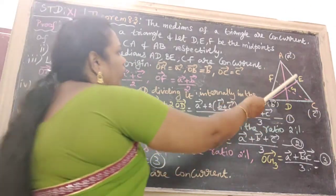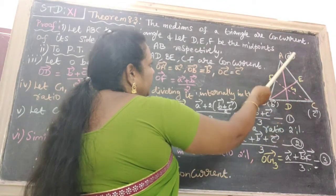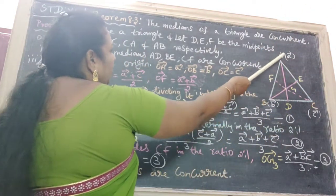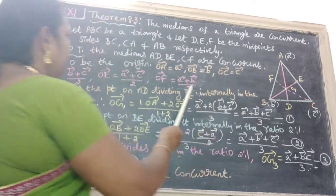Next, to find OE vector: C vector plus A vector divided by 2. Next one, to find OF vector: A vector plus B vector divided by 2.